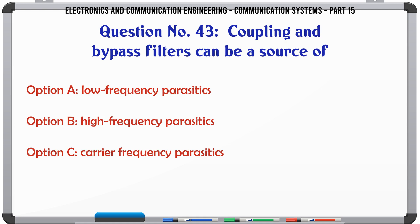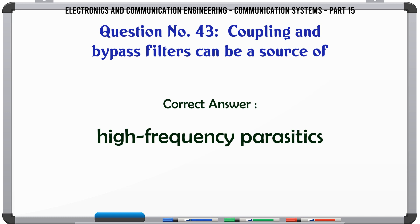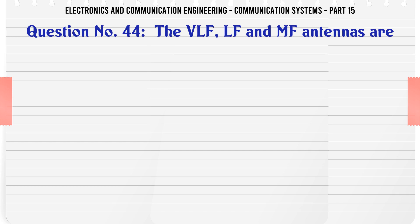Coupling and bypass filters can be a source of: A low frequency parasitics, B high frequency parasitics, C carrier frequency parasitics, D none of the above. The correct answer is high frequency parasitics.